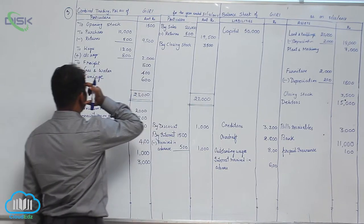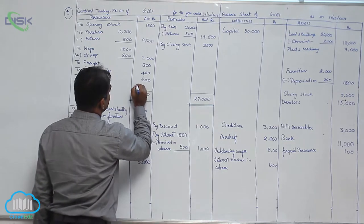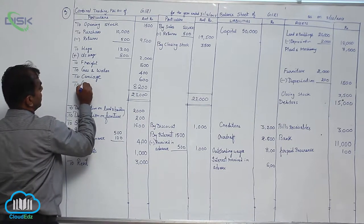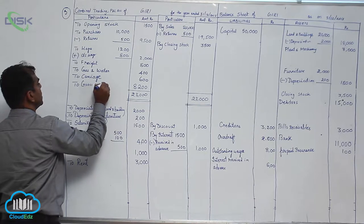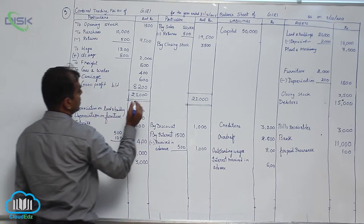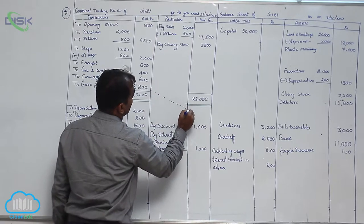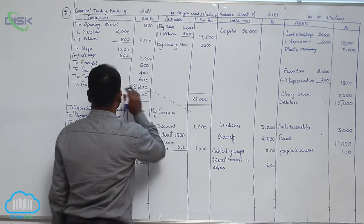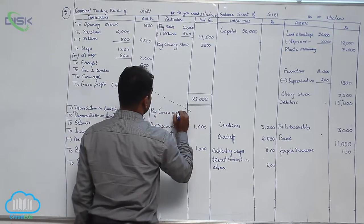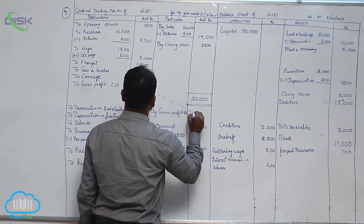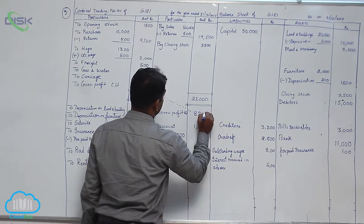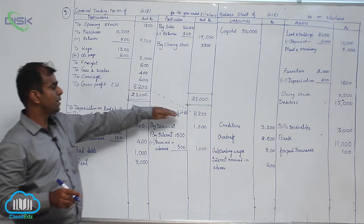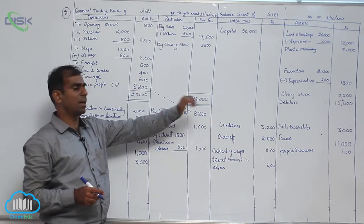Minusing all these items from 23,000, we will be getting our gross profit as 8,200. So we will write gross profit carried down 8,200. We should take it to the credit side of our P&L account, so we write by gross profit brought down 8,200.